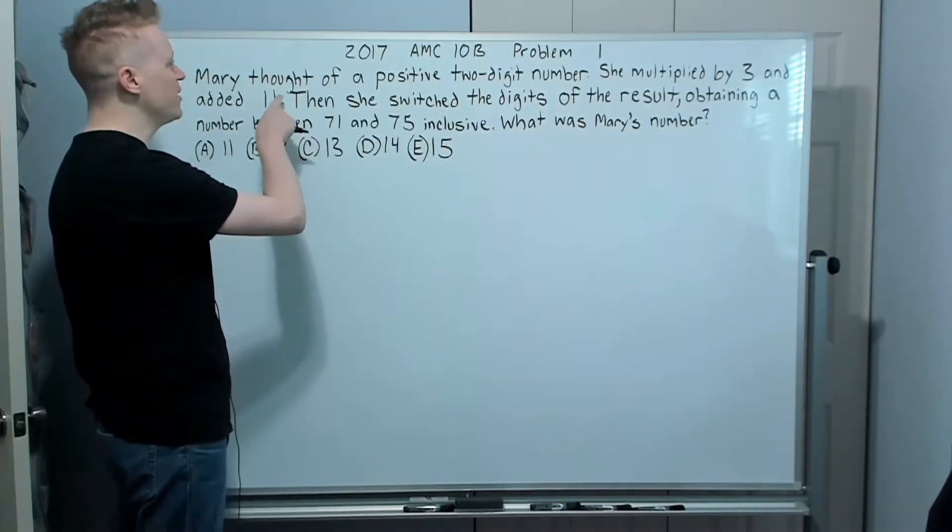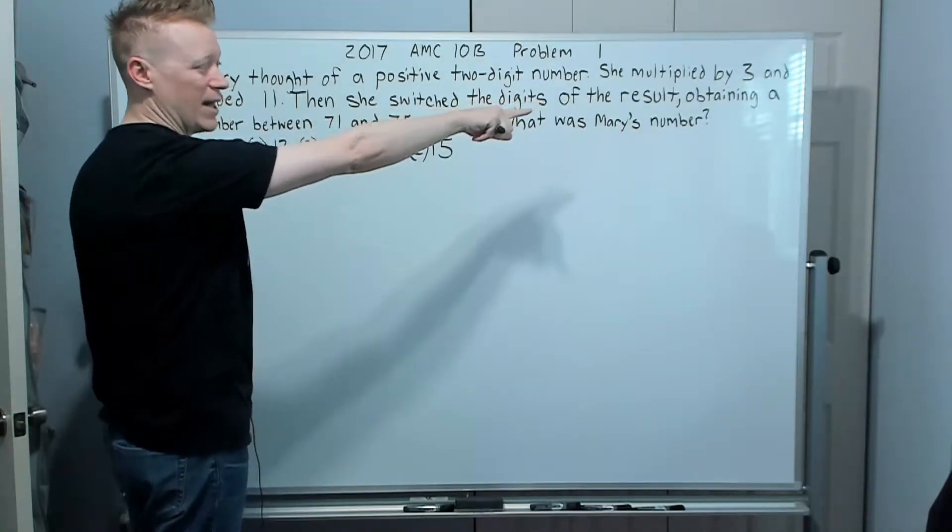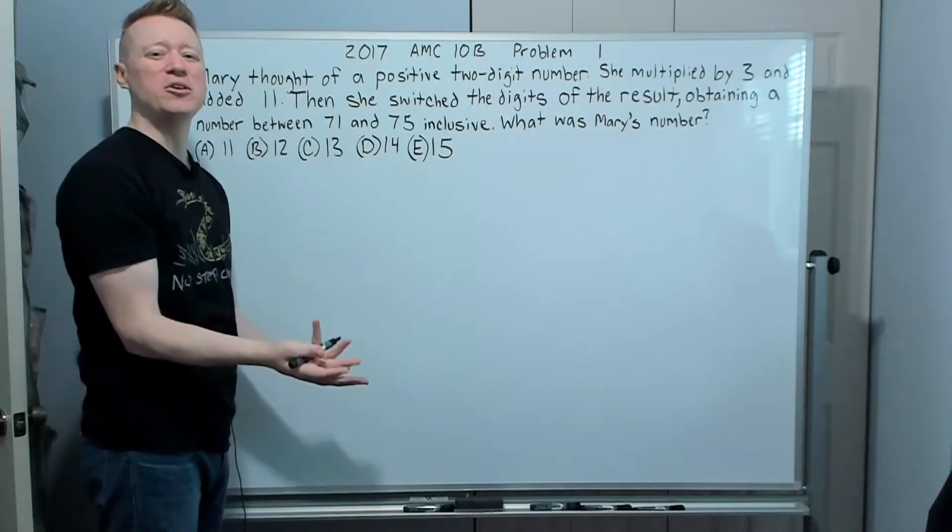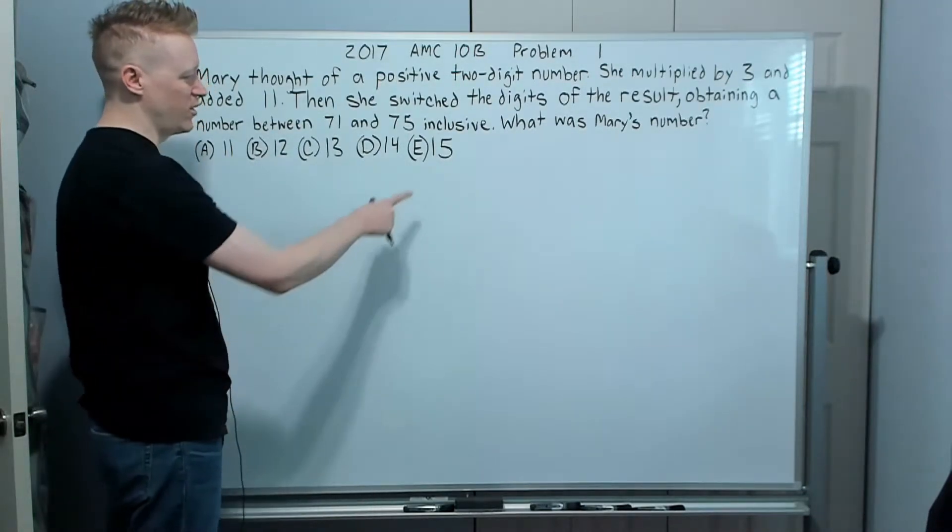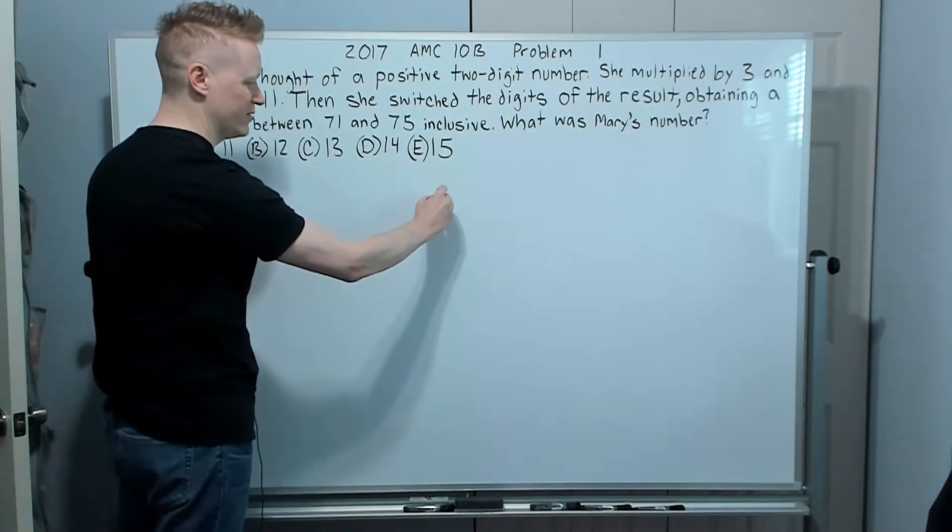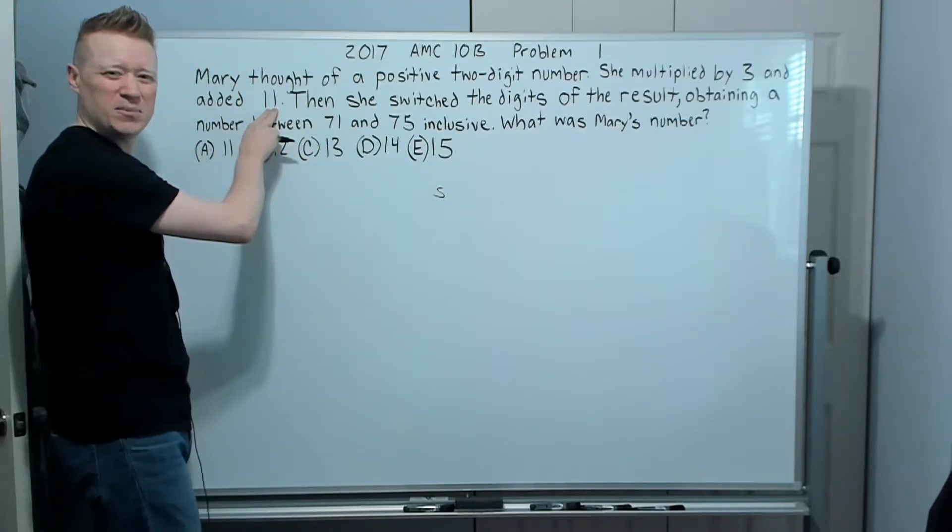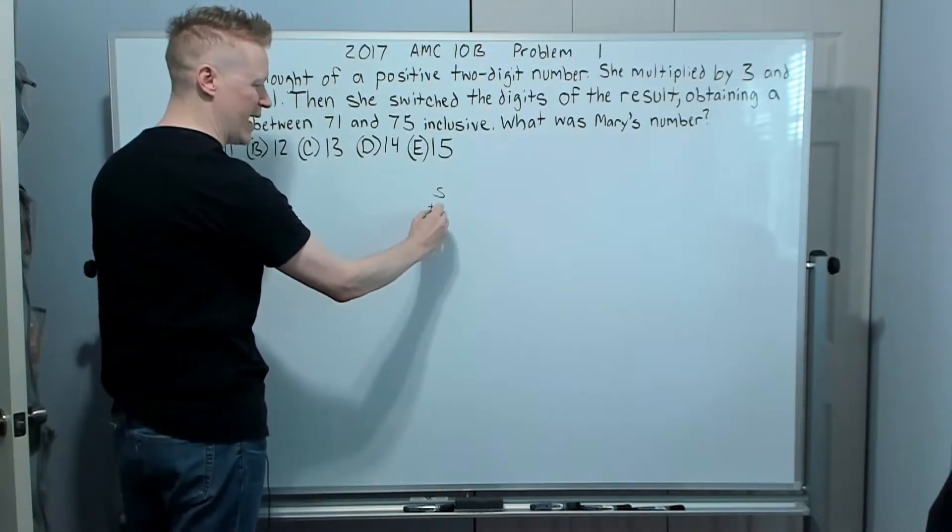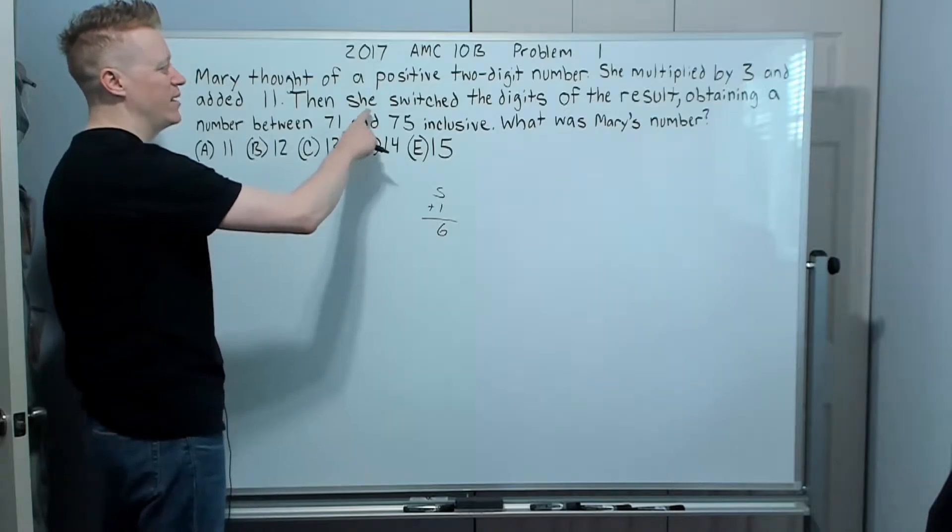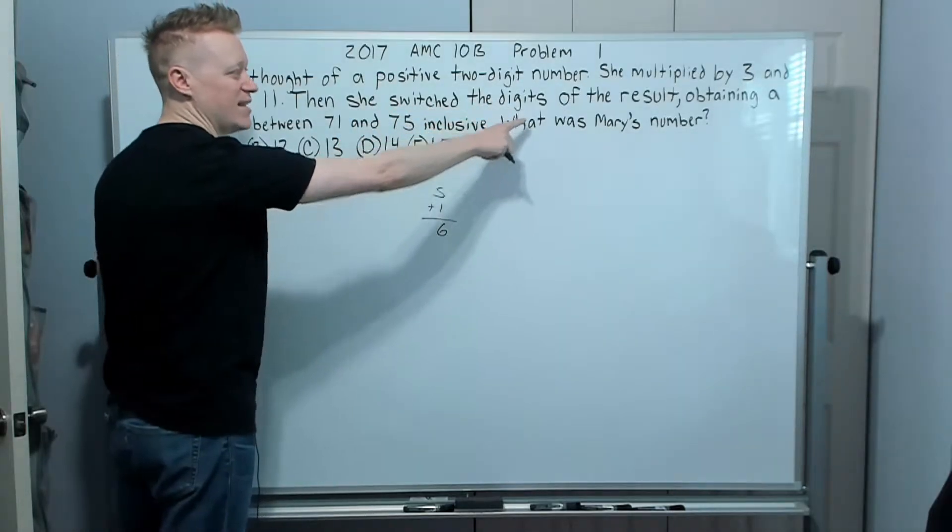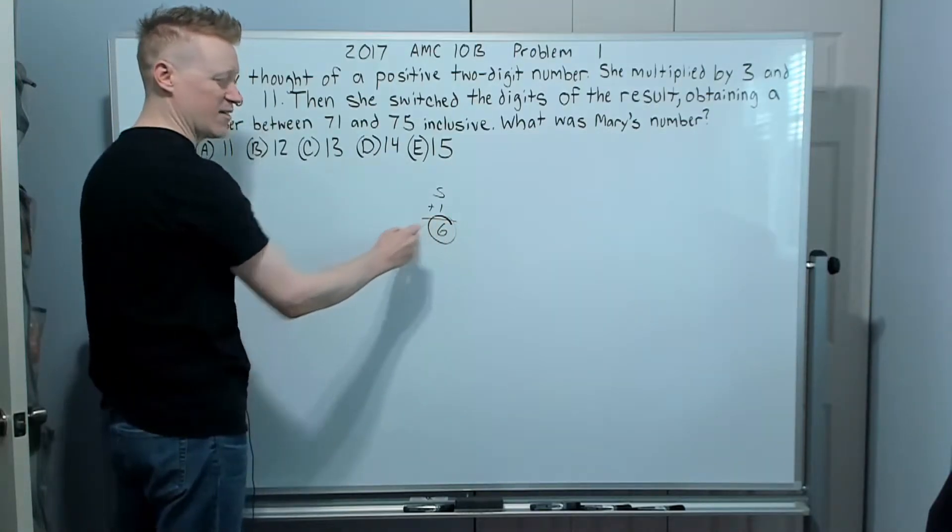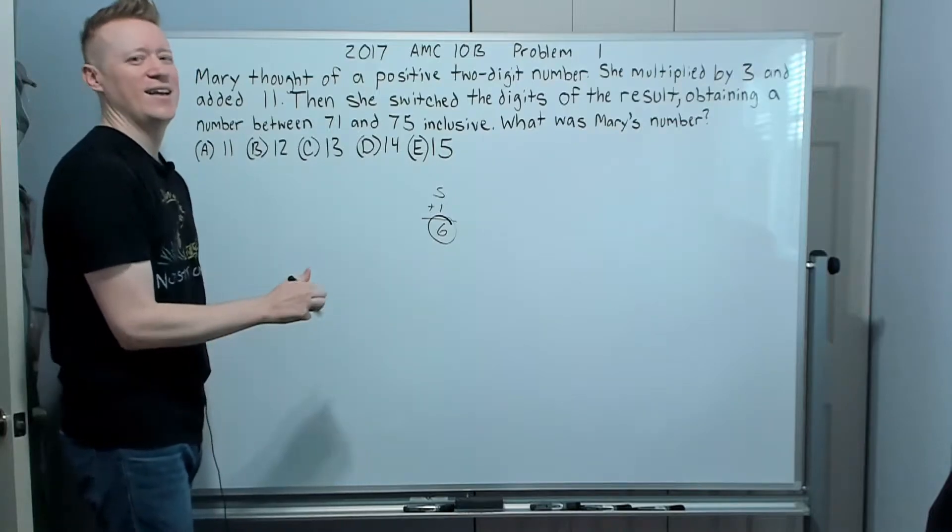Why don't we just use the answers? We could just do that. There is a slightly faster modified path from that even. And that is if you're going to multiply a number by three and then add 11, we can think about the units digit only. So for example, if I multiplied the five by three, it's going to end in five. And then if I added 11, I really care only about the units digit. I would be adding only one to that. The units digit of that number would end in six. Why does this matter? Because she switched the digits and got a number between 71 and 75.